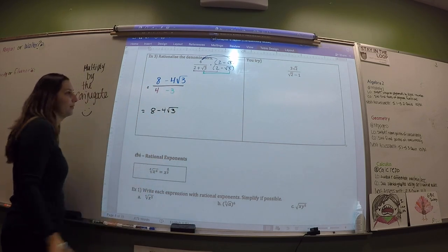O stands for outer: 4 times negative 4 root 2 gives negative 16 root 2. Then I is inner: 2 root 2 times 5 gives positive 10 root 2. And L is last: 2 root 2 times negative 4 root 2 — the 2 and 4 give negative 8, and root 2 times root 2 gives 2, so that's negative 8 times 2.